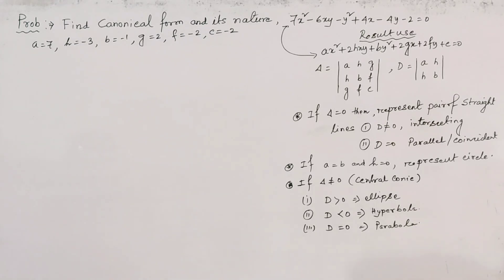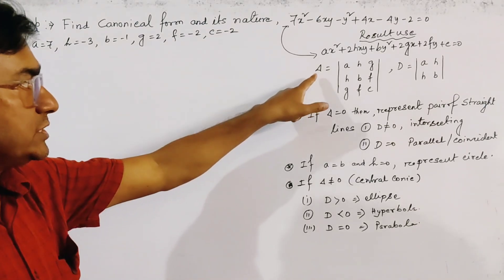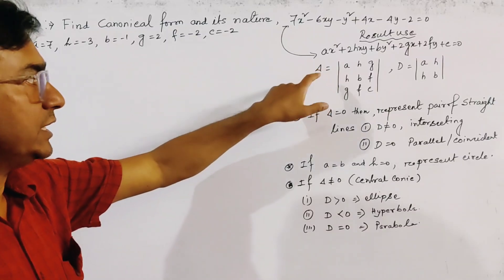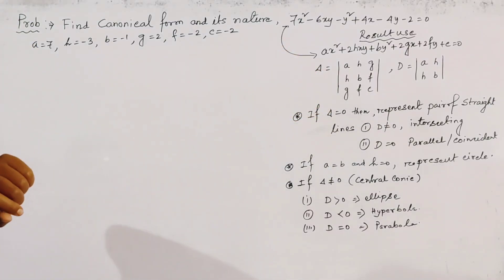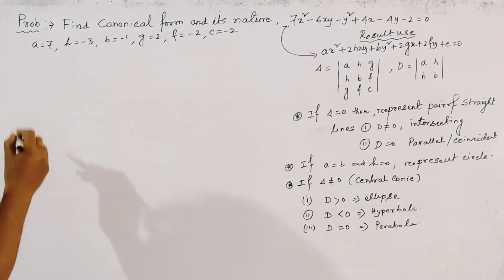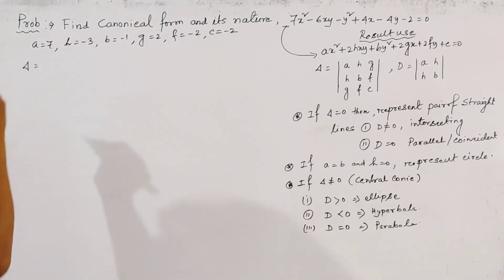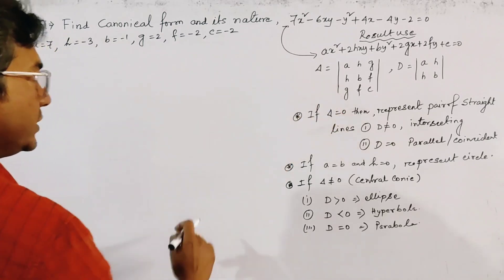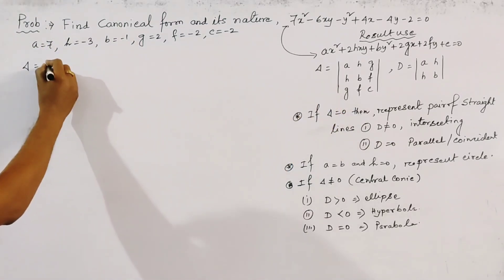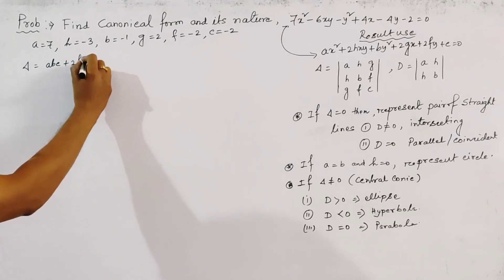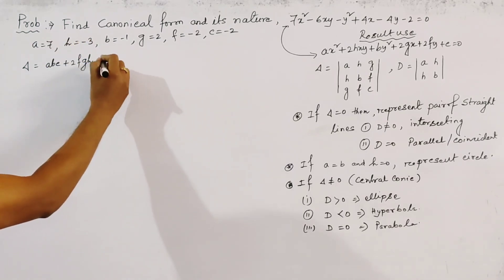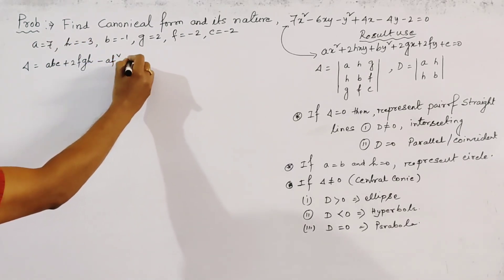Now we find two quantities: delta and D. Delta is the determinant of the general equation. If we expand this determinant, we get the result of the form: abc + 2fgh - af² - bg² - ch².